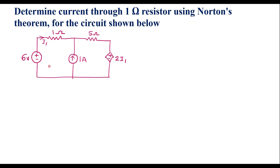This circuit consists of dependent sources as well as independent sources. The 6 volt voltage source and 1 amp current source are independent sources, whereas 2I1 is a dependent source. It is a current-dependent voltage source whose magnitude depends on current I1, where I1 is the current through the 1 ohm resistor.